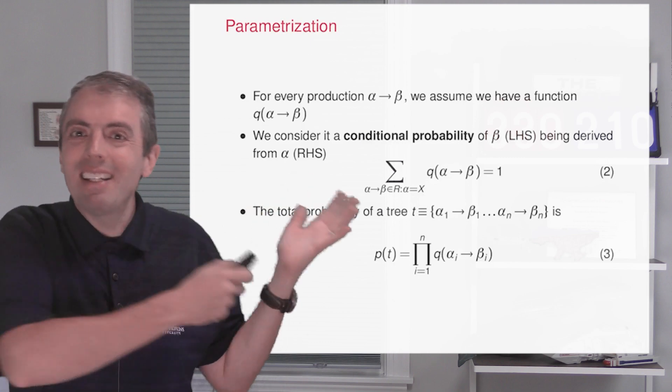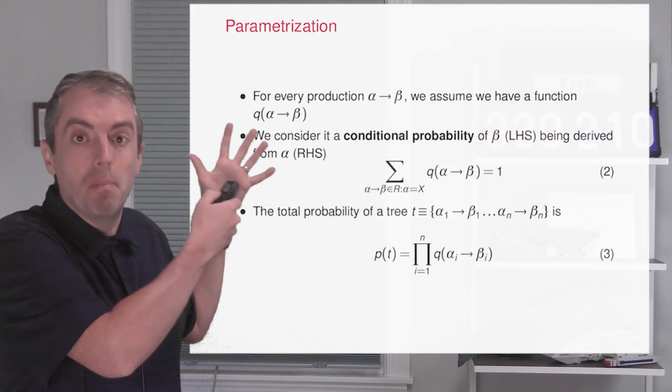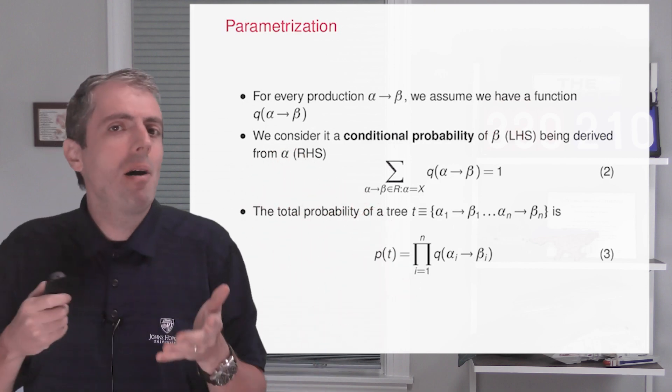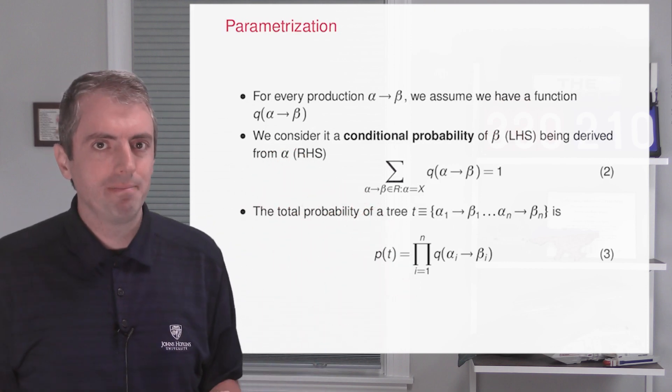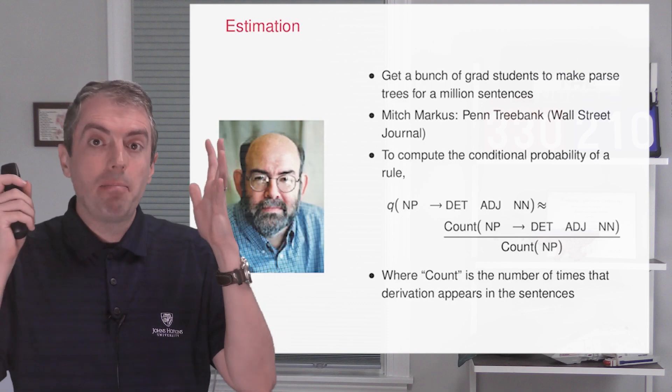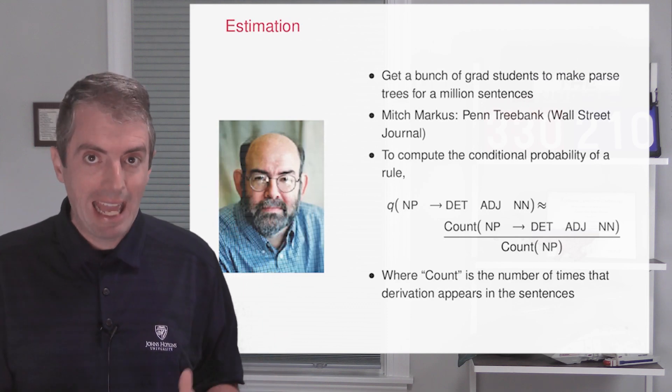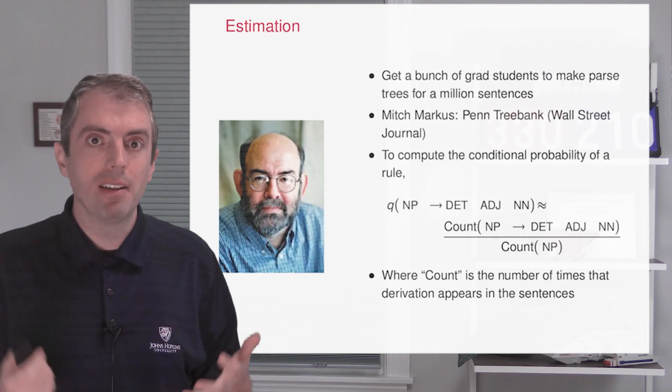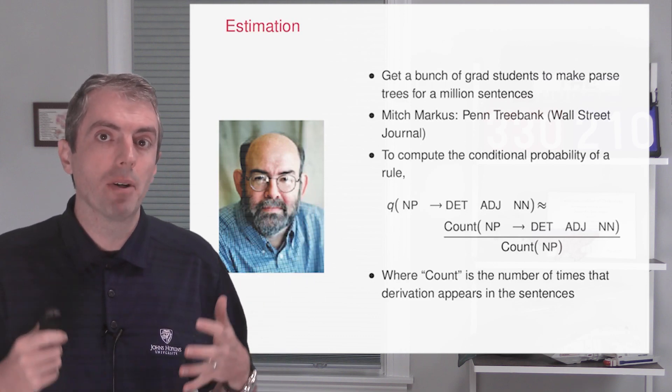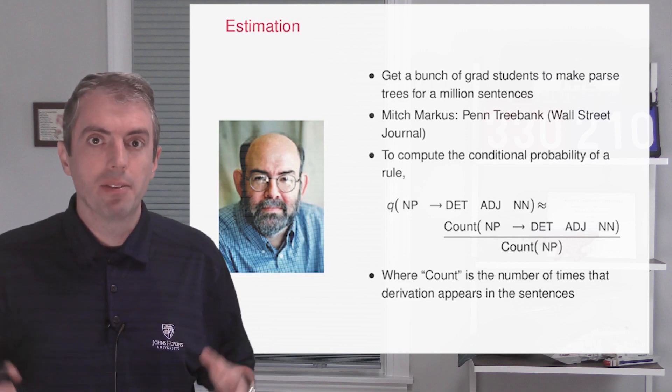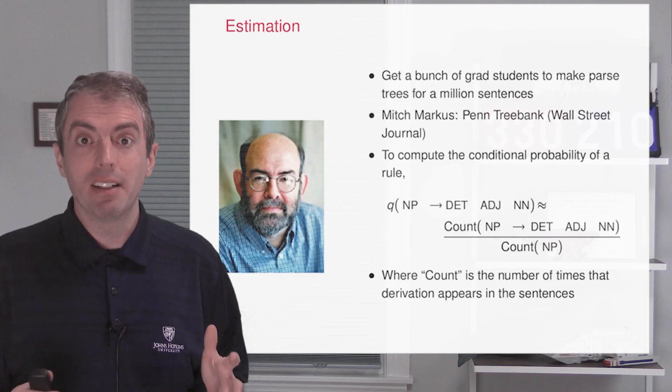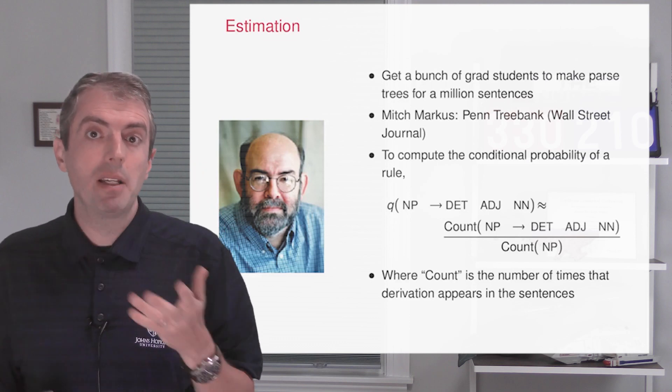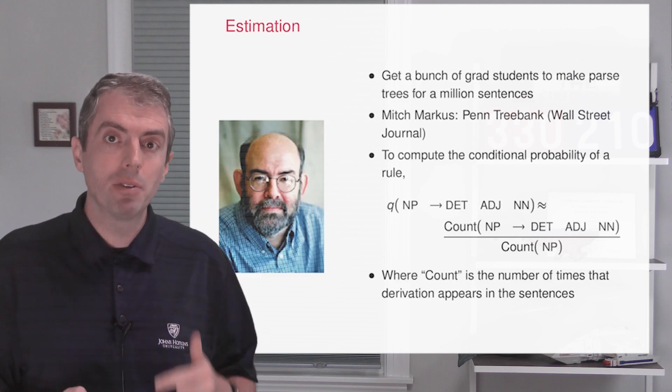Okay, so this answers the question of how do you compute the probability of a tree if you know the probabilities. But where do those probabilities come from? The answer to that is to get a bunch of sentences and parse them by hand. This was done by Mitch Marcus, who parsed a million sentences from the newspaper The Wall Street Journal. This requires fairly sophisticated annotators, for example, linguistics grad students. But once you have a bunch of parse trees, it becomes fairly easy to compute the conditional probability of a rule.